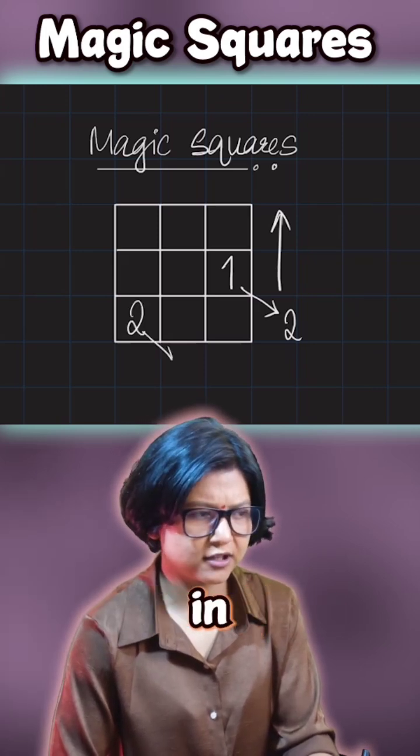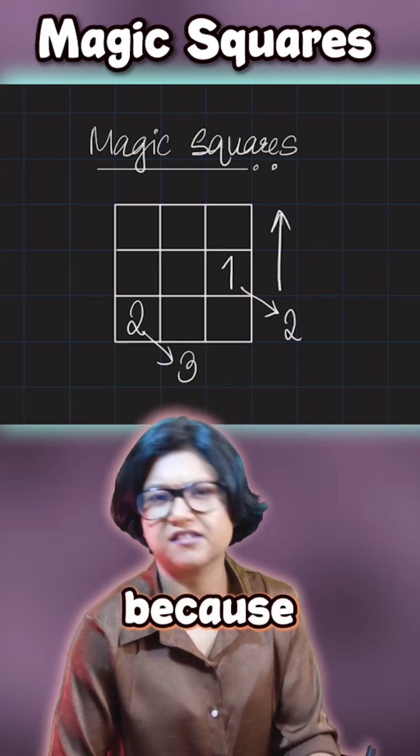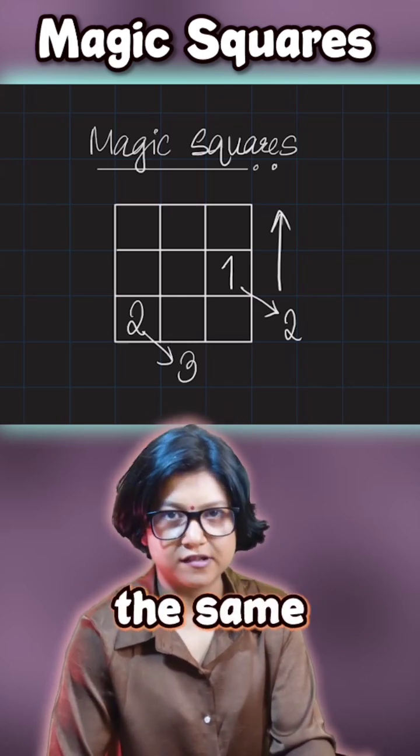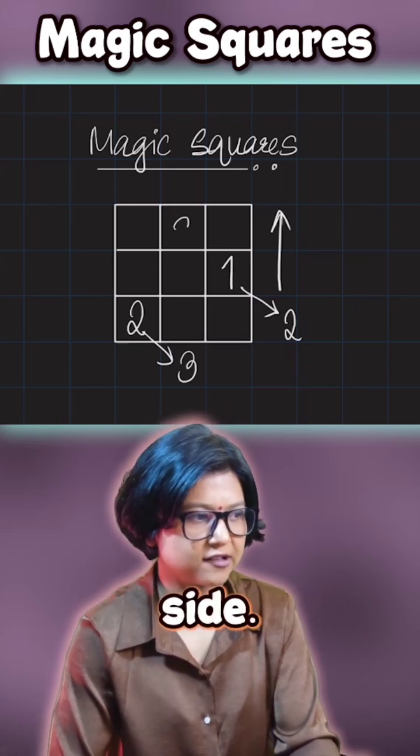Don't forget, I'm going in this direction, so 3 should be here. Again, because it's out of the square, I'll put it in the same column, but on the extreme side. The 3 here.